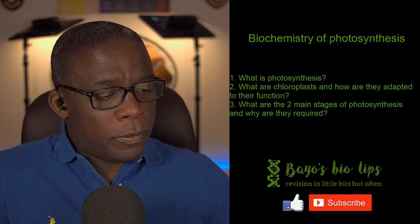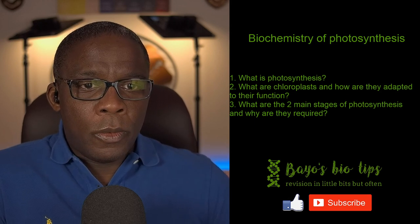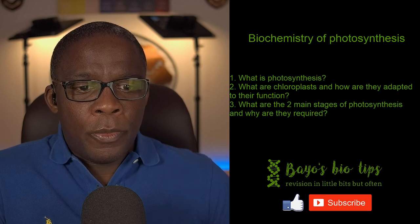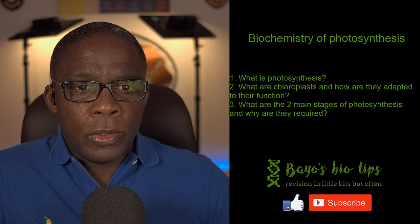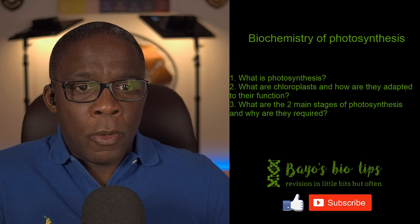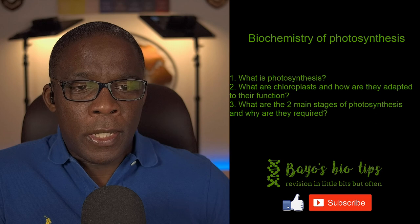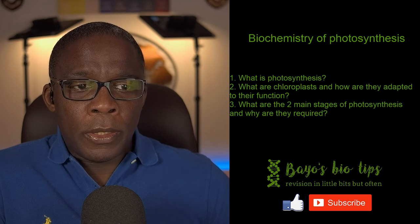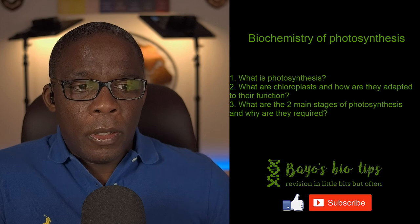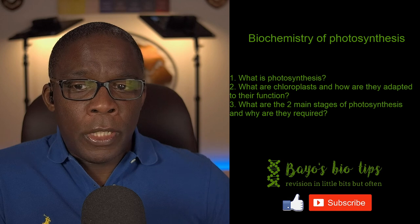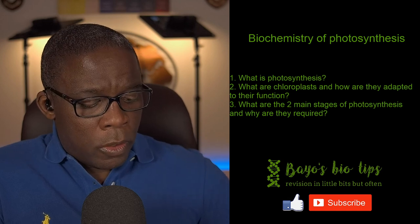Hello again, welcome back to my channel. In this lesson we're going to be looking at the biochemistry behind photosynthesis. We're going to break it down into these sections: first we're going to talk about what photosynthesis is, then where photosynthesis occurs in cells - basically the chloroplasts and how they're adapted to their function. Finally we'll look at the two main stages of photosynthesis in fair detail and why each of the stages are required.